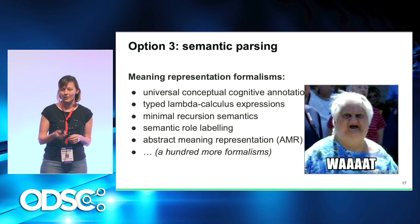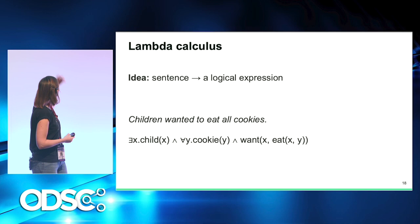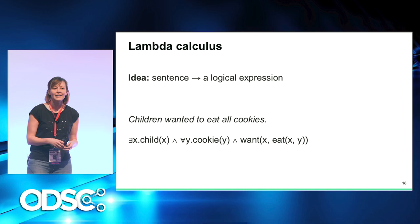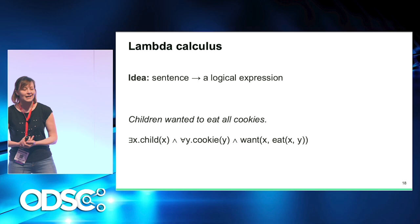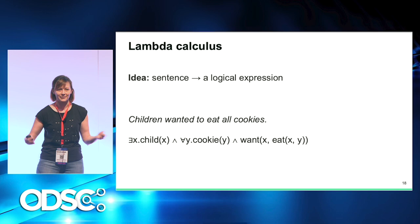Typed lambda calculus expressions are one way to represent meaning in natural language processing. The idea is to represent a sentence as a truth utterance — the sentence will be true if there exists a set of entities that are children, a set of entities that are all cookies, an event of wanting where children are doing the wanting, and another event of eating of those children eating cookies.